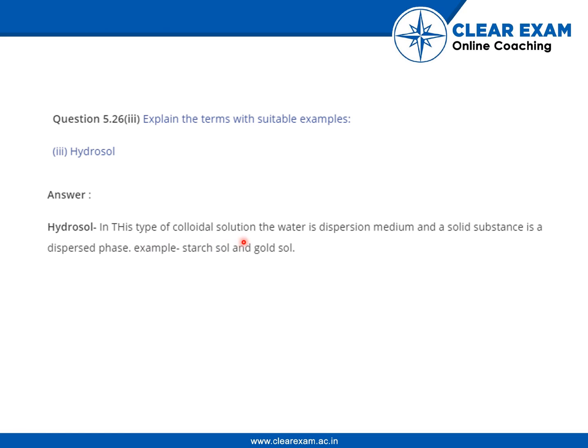Moving on, the third type is hydrosol. In this type of colloidal solution, water is the dispersion medium and a solid substance is the dispersed phase. Examples are starch sol or gold sol.